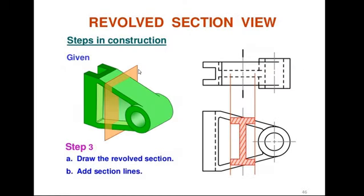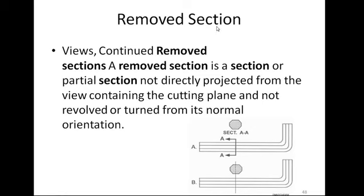In revolved section, we have taken a cut and then turned 90 degrees, placing it into the view. But in removed section, what we are doing is: this is our bar, we have taken the cut here, but instead of superimposing this hexagonal view, we will keep this hexagonal at a separate side — keep aside — so that it will not be mixed with your view. This is the only difference between revolved section and removed section.